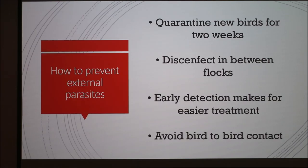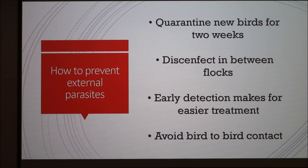So how do you prevent external parasites? When you get new birds, quarantine them for two weeks to make sure they don't have any parasites. If they do, treat them away from your other flock. If you get new flocks, disinfect in between. Mites can travel on pet carriers and other supplies, so make sure those are clean before you enter your facilities. Early detection makes for easier treatment — if you detect it earlier, it's easier to treat than if you get a full infestation.